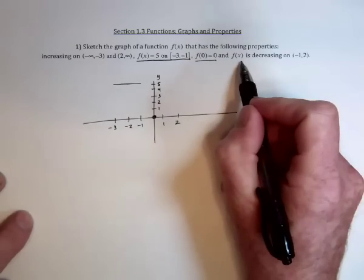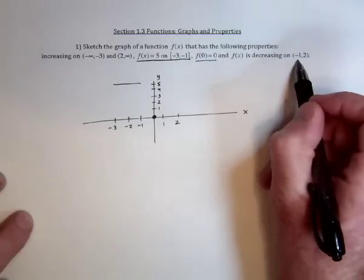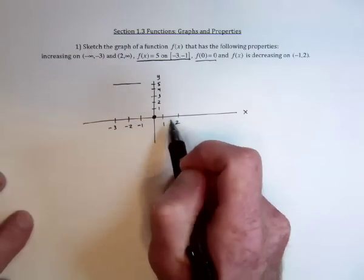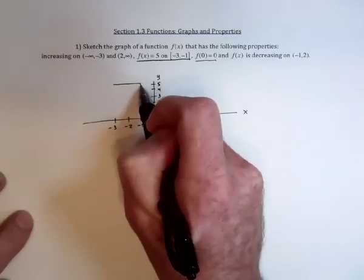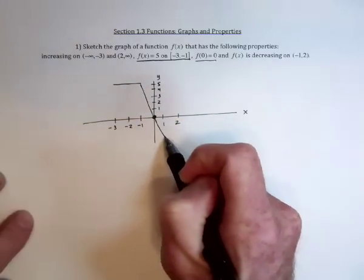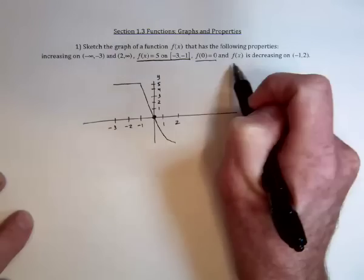It's decreasing or going down from when x is a negative 1 to when x is a 2. So from this to this region, it's going down. And we have that finished.